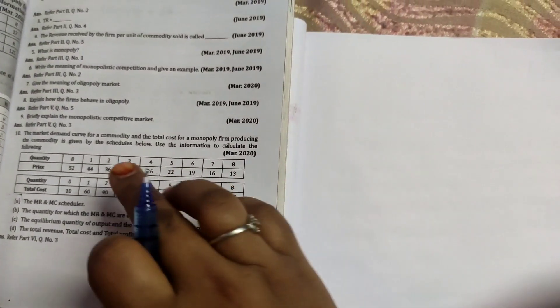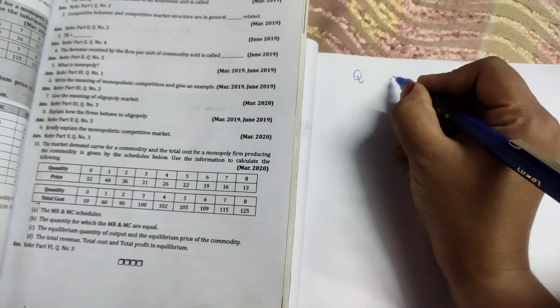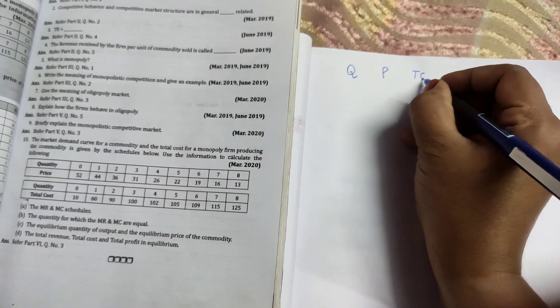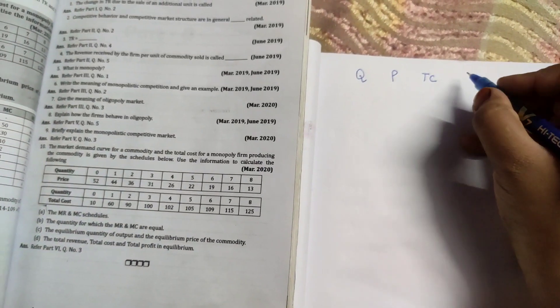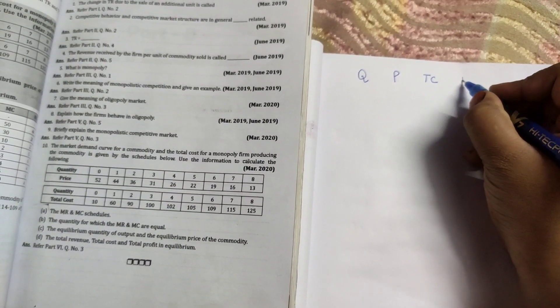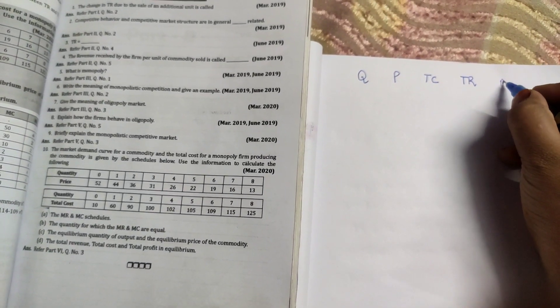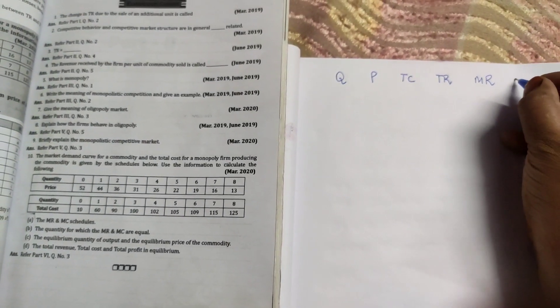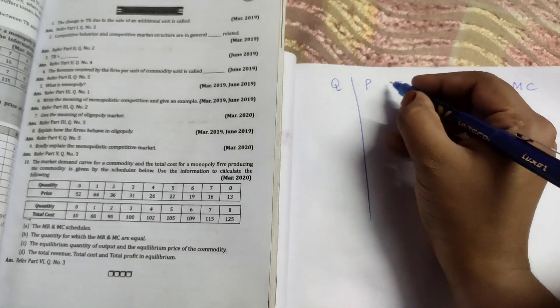So let's do this sum. As it is, quantity and price will write off, quantity will write off, price will write off from here. We will write off the total cost as it is. We will write down the total cost. Now we need to calculate MR and MC. It means to calculate MR, we need to calculate total revenue. By that only we can calculate marginal revenue. And total cost, with that help we can calculate MC.